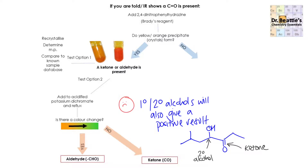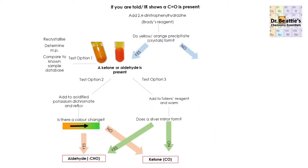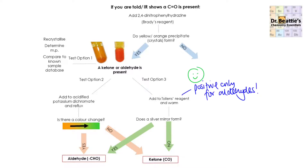So if you've got multiple functional groups in a compound, this isn't the best test option to use. The other test you could do is add Tollens reagent and warm. A positive result — a silver mirror — means you've got the aldehyde. If you don't form the silver mirror, you've got a ketone. Tollens reagent is really powerful here because it only gives a positive result for aldehydes.